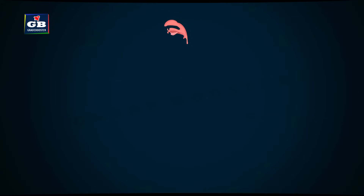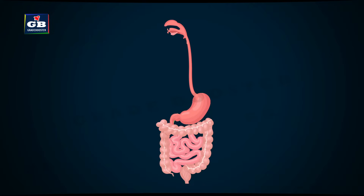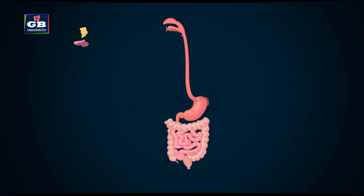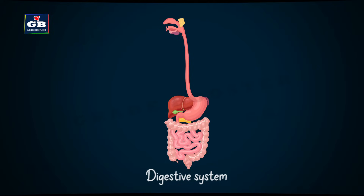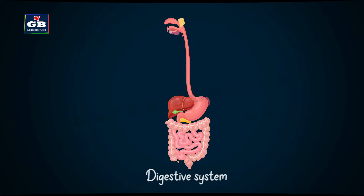Here we can see that all these parts are connected to one another and form a long tube or canal called the alimentary canal. Glands like salivary glands, liver, gallbladder, and pancreas are attached to the alimentary canal and form the digestive system. So, accessory glands plus alimentary canal together make the digestive system.